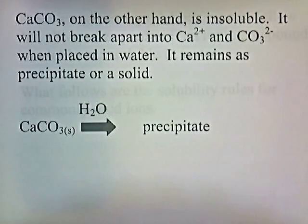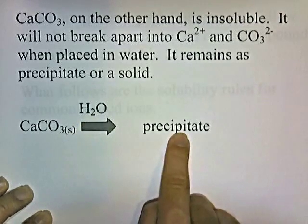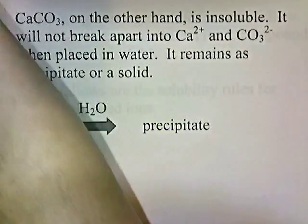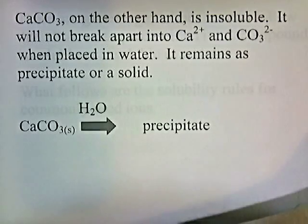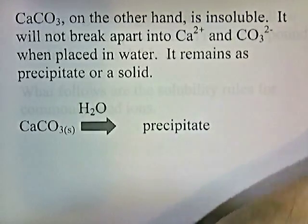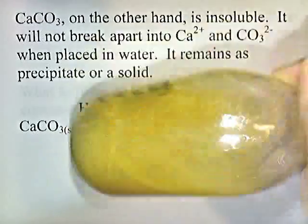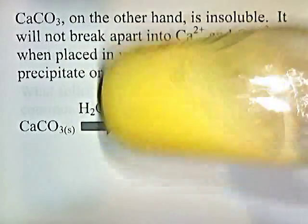Calcium carbonate, on the other hand, is insoluble. It will not break apart into calcium and carbonate when placed in water — it remains as a precipitate or a solid. Calcium carbonate is the ingredient in chalk, so I ground up some chalk and put it in here. I'll add some water, shake it up, and we'll see what happens. If it's soluble, it'll eventually dissolve and turn clear. If it's insoluble, it won't dissolve and it'll look cloudy and mucky.